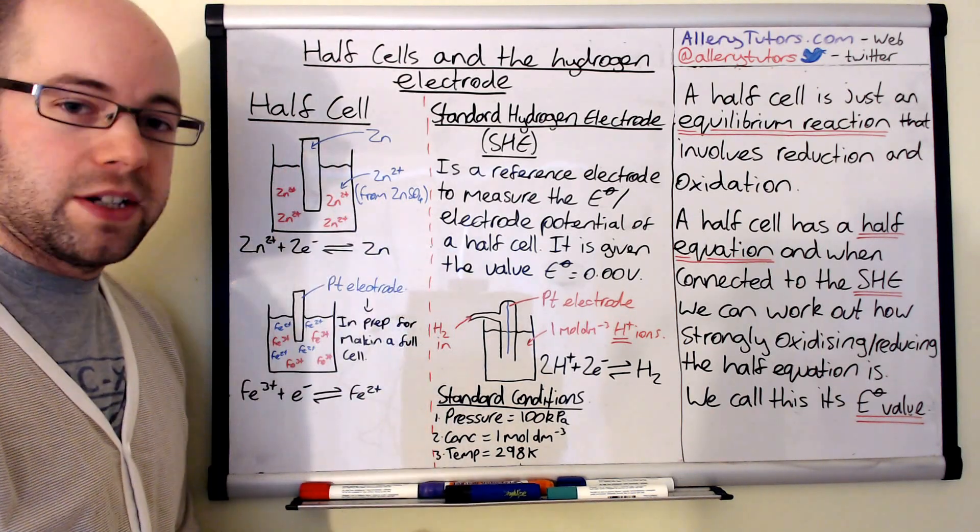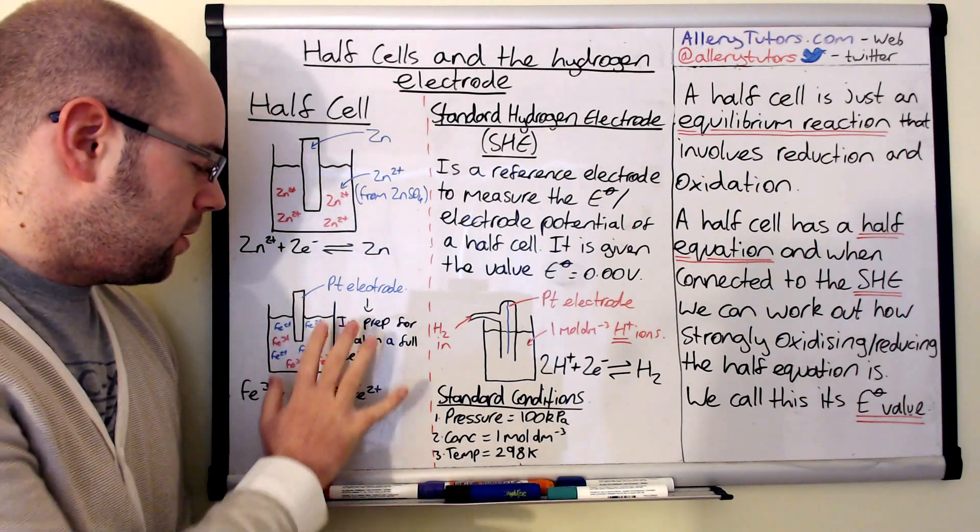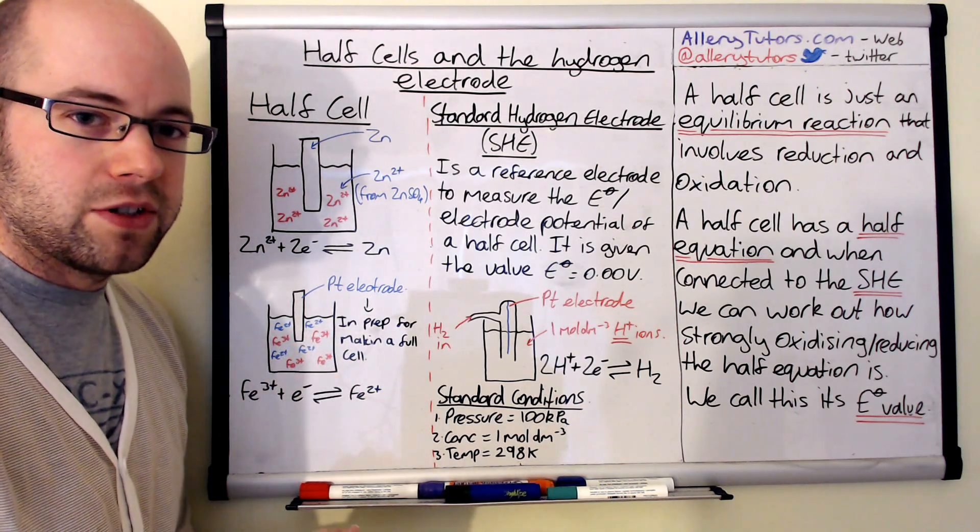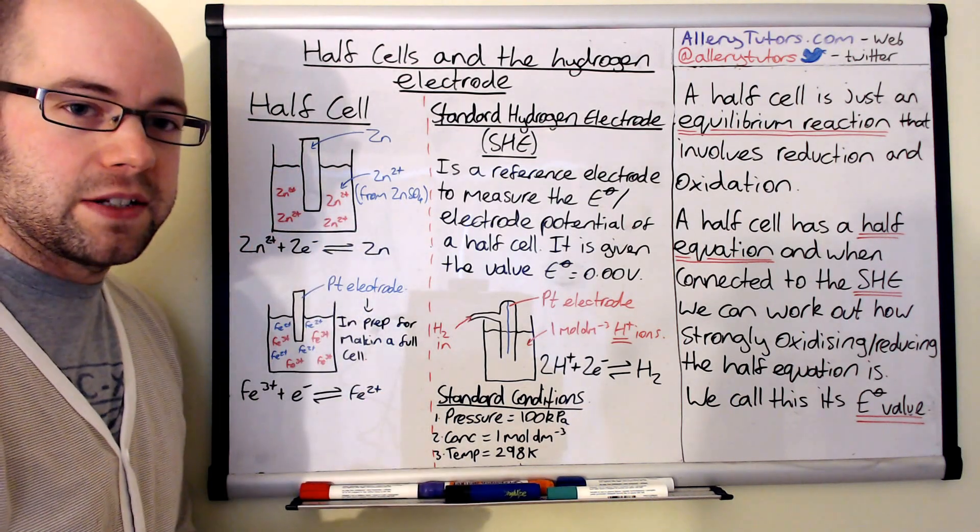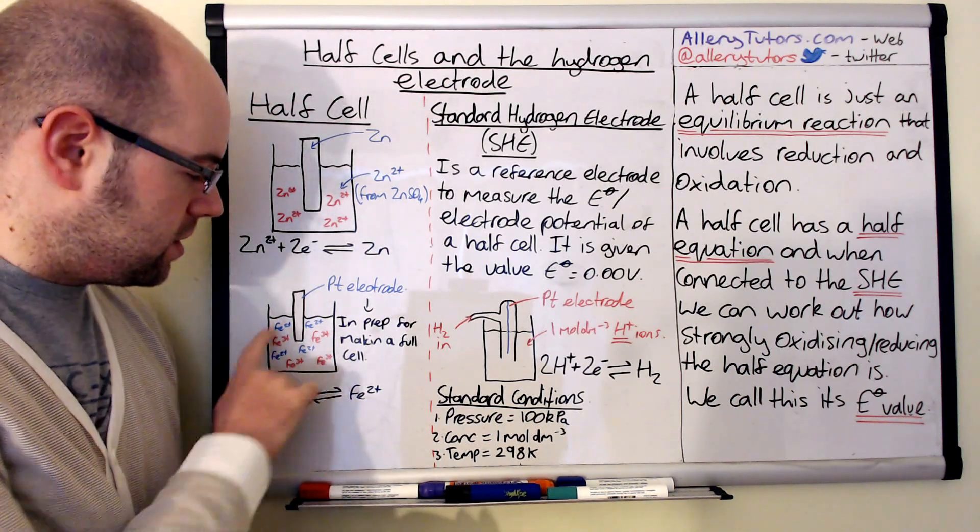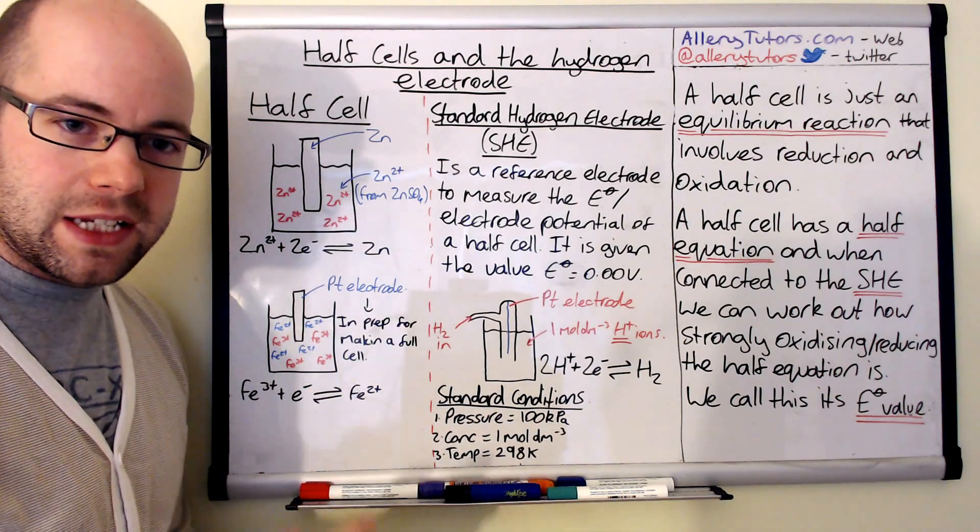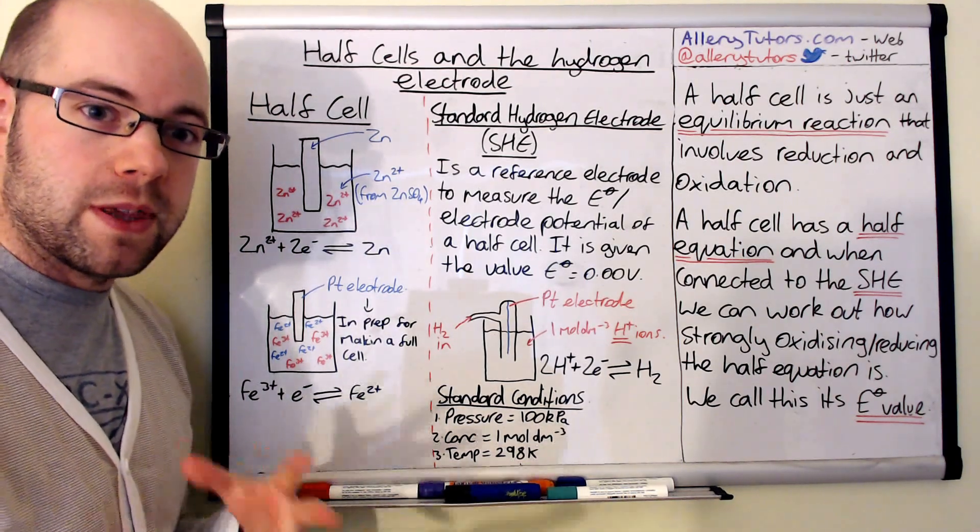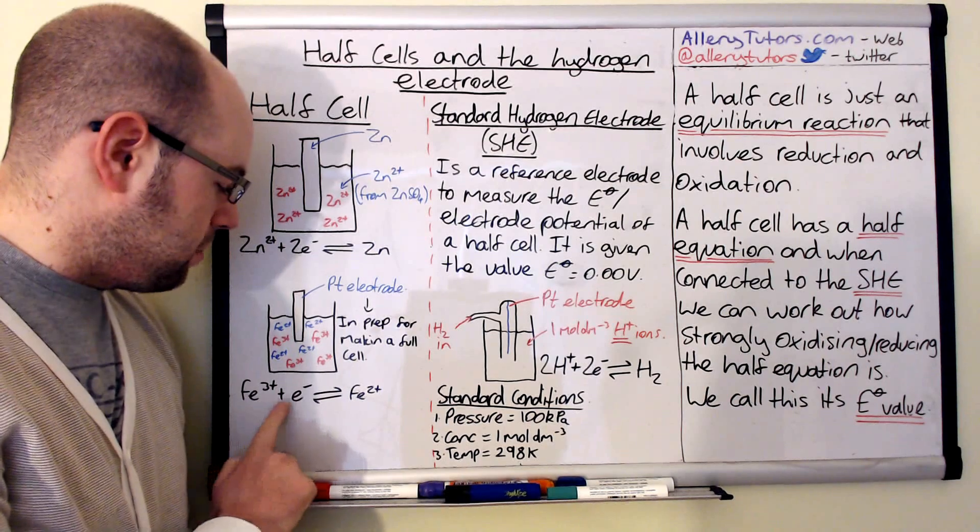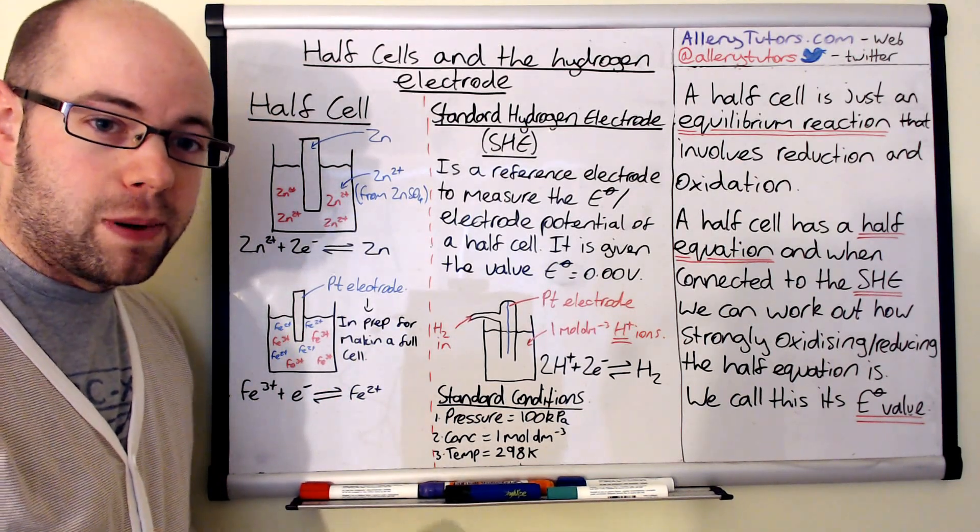We can also get it where we have two ions in solution. Instead of having a metal and its ionic version, we can have two ions in the same solution. So here we've got Fe2+ and Fe3+. These will exist in solution and they will establish an equilibrium between themselves. We've got Fe3+ plus an electron will form Fe2+.